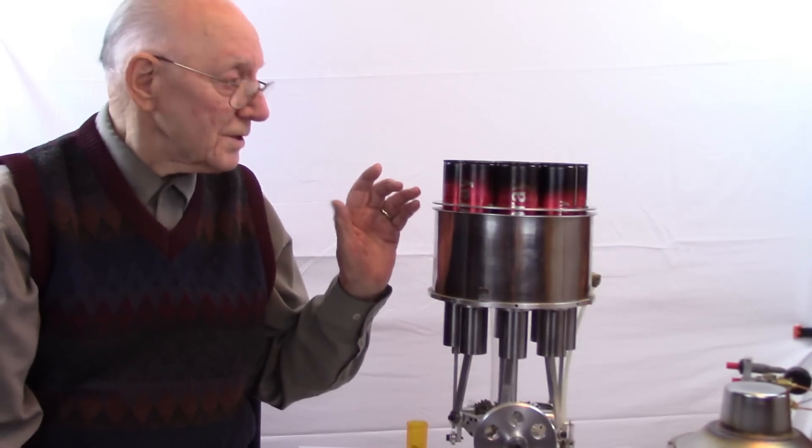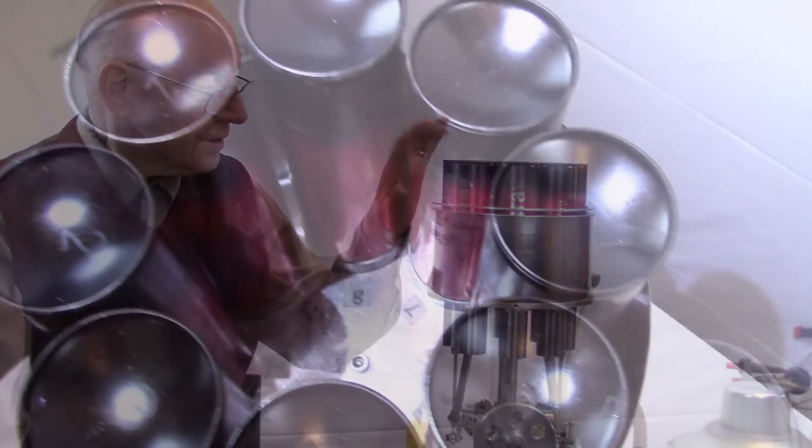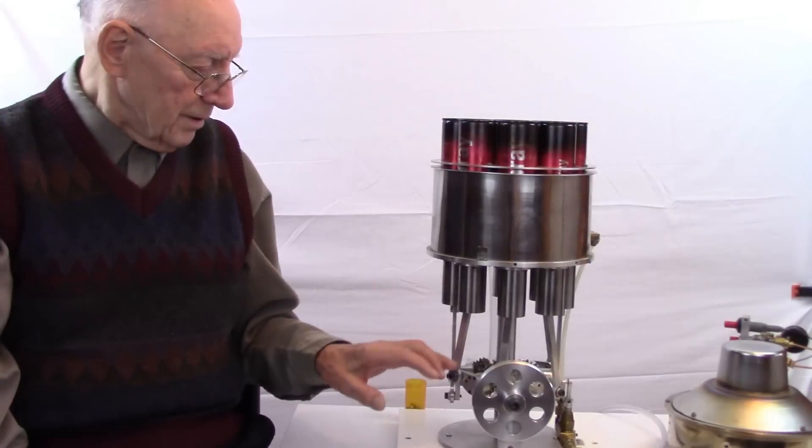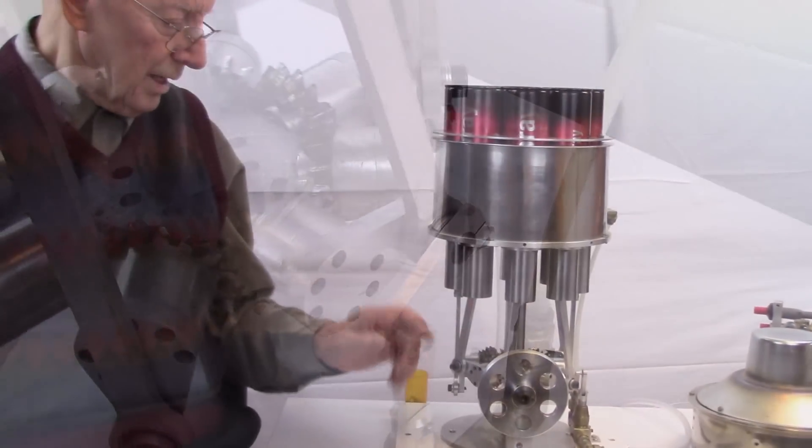Like any other Stirling engine, it has the displacer cylinders and pistons, and on the bottom here is the power pistons and cylinders and pistons. And on the bottom here, there's eight gears that's coupling all eight cylinders together.